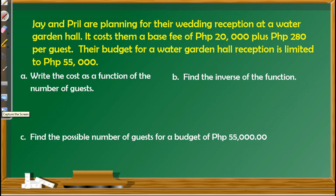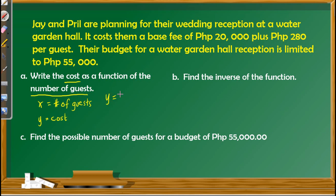Jay and Prill are planning their wedding reception at a water garden hall. It costs them a base fee of $20,000 plus $280 per guest, and their budget for the water garden hall reception is limited to $55,000. For letter A, write the cost as a function of the number of guests. Let X be the number of guests and Y be the cost. The cost function is: Y = 20,000 + 280X.